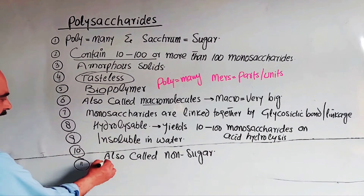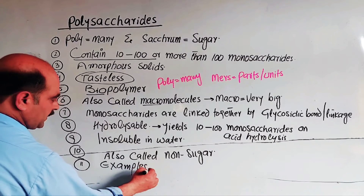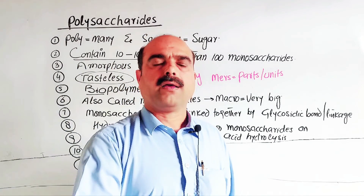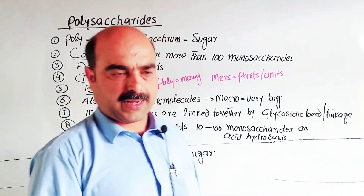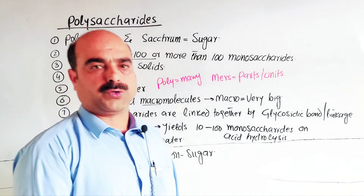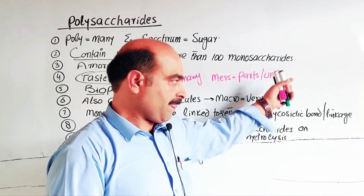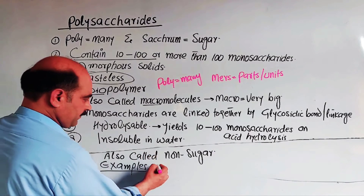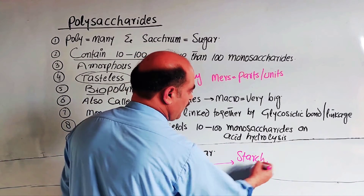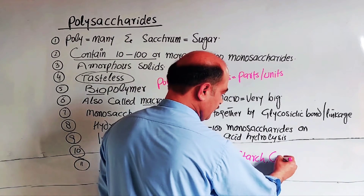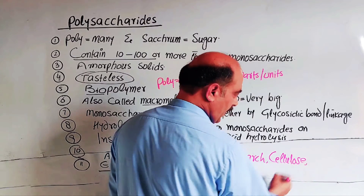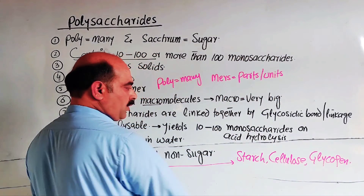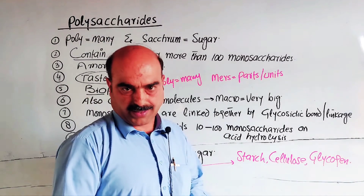They are also called non-sugars because they are tasteless. Now the examples of polysaccharides — note that glucose, fructose, lactose, triose, tetrose, pentose are monosaccharides, and sucrose, maltose, lactose are oligosaccharides. The actual examples of polysaccharides are: starch, cellulose, and glycogen. These three — starch, cellulose, and glycogen — are the examples of polysaccharides.